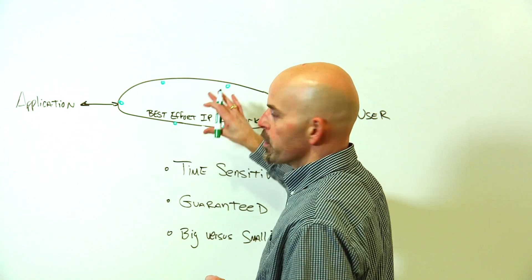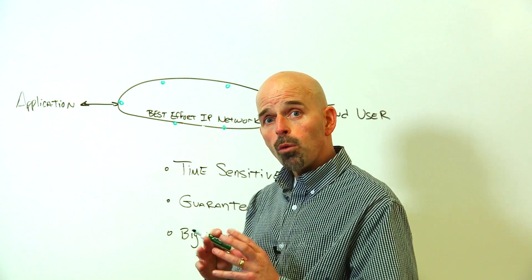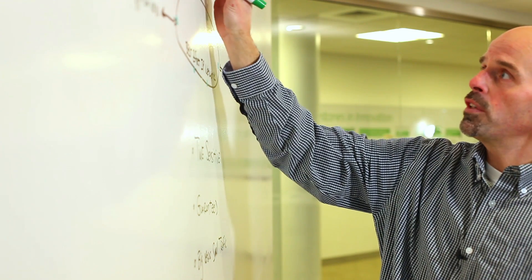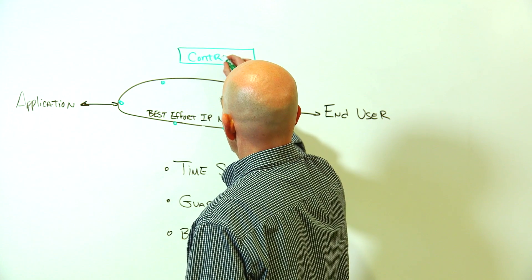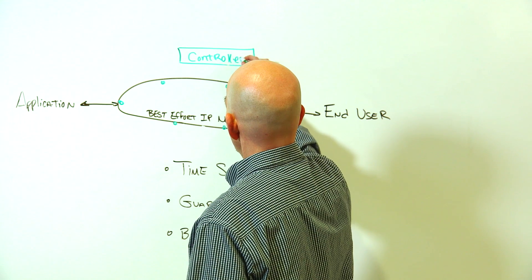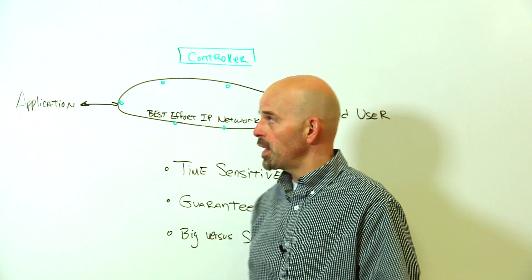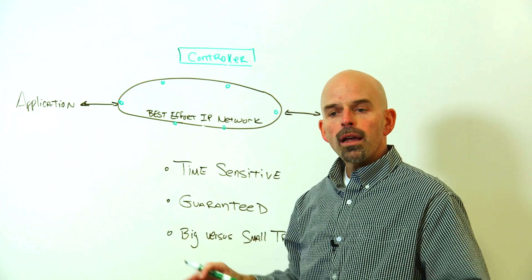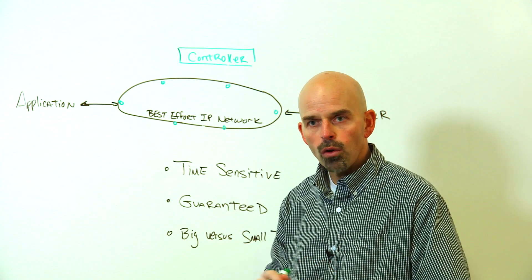Once you have these control points, these programmable control points, almost like toll booths if you will, the next layer up is you have to have a controlling function, almost akin to the toll booth operator. So when you have these basic components, you now have a network that is programmable, that you can exercise control over.